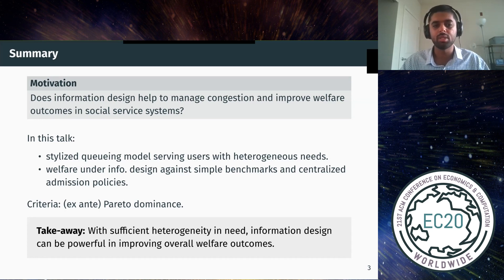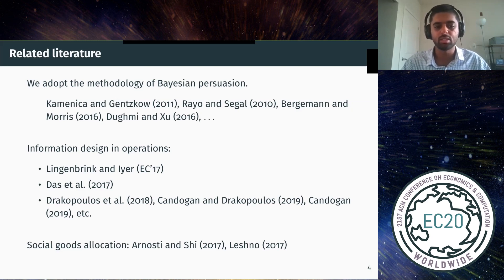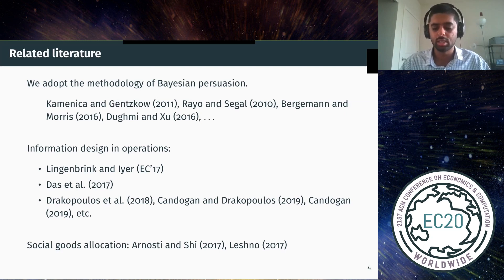Before getting into the model, let me briefly discuss related literature. We adopt the methodology of Bayesian persuasion to study our problem, and there is a long line of work in economics and the EC community studying this under various settings. More closely related is the recent line of work on information design in operations. In particular, the EC paper by Lingenbrink and Ayer studies information design in a queueing system for revenue maximization — in contrast, our setting has no prices and our goal is to manage congestion, though our model is based on theirs. Another closely related work by Dask et al. studies a static model of a traffic network and asks whether information sharing can help reduce congestion. There is also a broad literature on social goods allocation that considers queuing models.